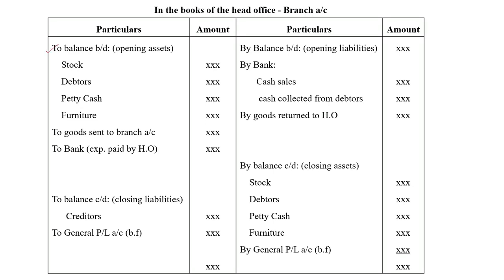On the debit side, the first entry is to balance brought down — we record all opening assets. Then we record goods sent to branch, all expenses paid by the head office, and closing liabilities. On the credit side, we record opening liabilities, cash sales, cash collected from debtors, goods returned to head office, and all closing assets. This is similar to the cost price format.